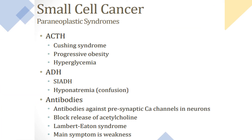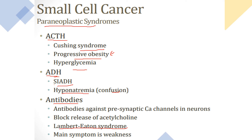Small cell carcinoma can present with paraneoplastic syndromes. It can produce ACTH, causing Cushing syndrome with progressive obesity and hyperglycemia. It can also produce ADH, causing SIADH — syndrome of inappropriate ADH — presenting with hyponatremia and confusion. Additionally, it can produce antibodies causing Lambert-Eaton syndrome, similar to myasthenia gravis, where antibodies target presynaptic calcium channels in neurons, blocking acetylcholine and causing muscle weakness.